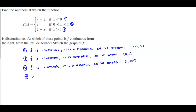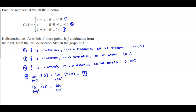Now let's find the limit as x approaches 0 from the left of the function. When we look at that limit, we're looking at x plus 2. Evaluating at 0 gives us 2. Then, the limit as x approaches 0 from the right uses e to the x, and evaluating that limit gives e to the 0, which equals 1.